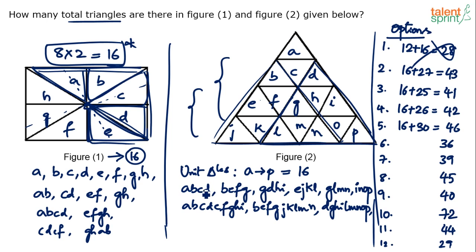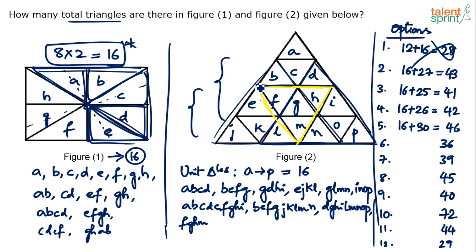Wait — I think we missed one triangle in the four-unit count. There's an inverted triangle: F,G,H,M. Usually this is what gets missed — the inverted four-unit triangle. So four-unit triangles total seven, not six. Running total: 16 unit triangles + 7 four-unit + 3 nine-unit = 26.